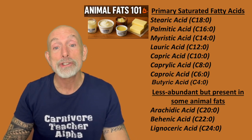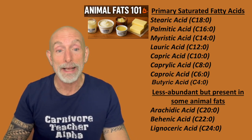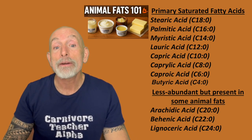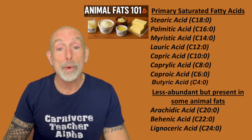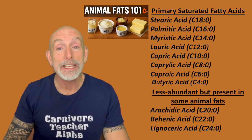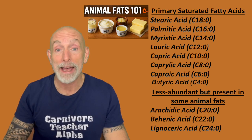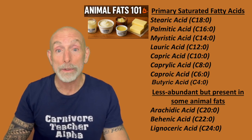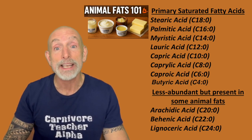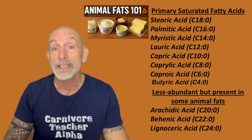Let's take a look at the major saturated animal fats. Butyric acid is a short-chain saturated fat found in butter, ghee, and raw milk fat. It fuels your colon cells, is anti-inflammatory, and is gut healing.